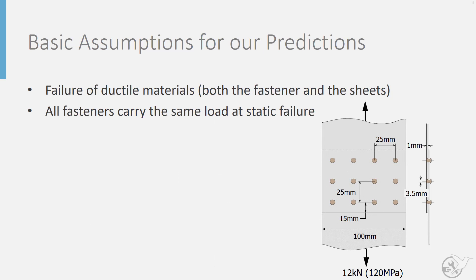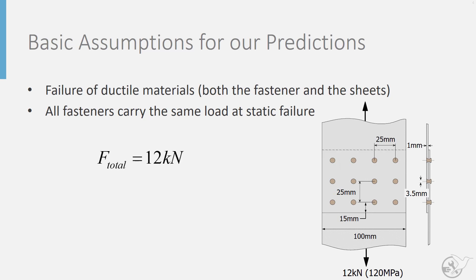Related to this plasticity assumption is that all fasteners carry the same load at static failure. Below static failure you will actually have a different amount of load transfer by each row. But just like plasticity redistributes the stress along the width of the plate, the highly loaded rows will start to plastically deform, which will redistribute load to the lower loaded rows. So at final failure we can assume that the total load is distributed amongst all of the fasteners that transfer load from one plate to another.